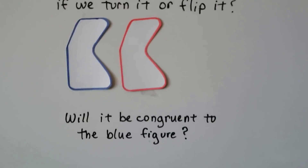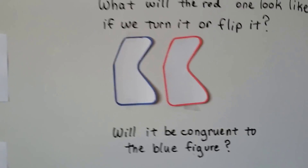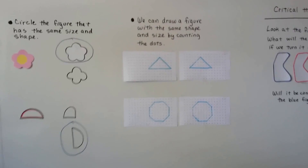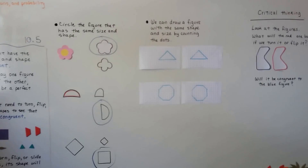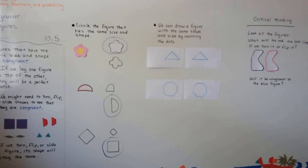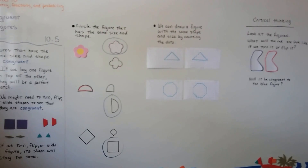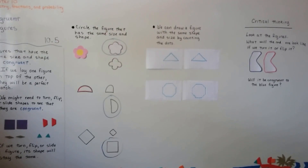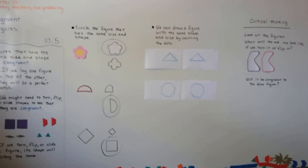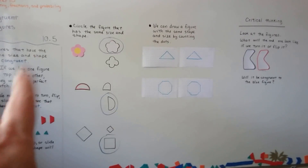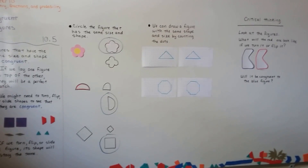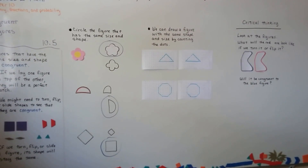Remember, congruent means you can lay the shapes on top of each other — whether you have to spin them, slide them, or whatever — and they'll be a perfect match. That's congruent. We're going to talk about perimeter next; that's how big something is around its outside edge. I hope I'll see you there and I hope you're having a great day. Bye!